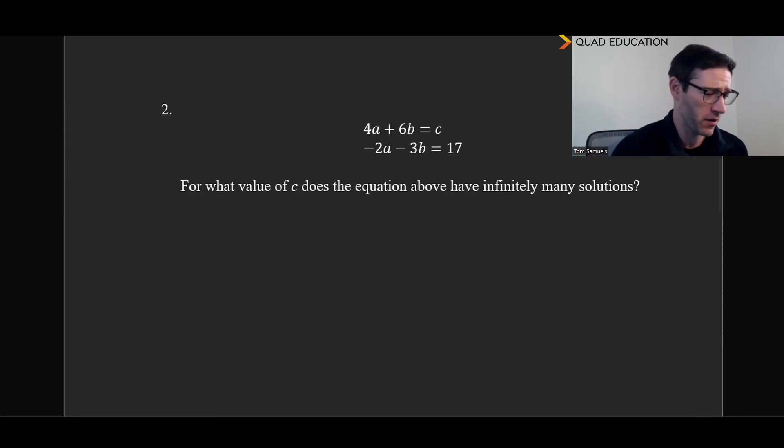And moving on to our next one here, see what you can do with this one. Let's take a look. So we have 4a plus 6b equals c, and negative 2a minus 3b equals 17. And they ask us, for what value of c does the equation above have infinitely many solutions? So instead of looking for parallel lines here, we are looking to make the same line two times.